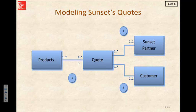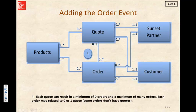We've got our multiplicities on here, linking our relationships along our associations. Now if we'd like to take it a step further we can add the order event to our diagram. So now we have not only just quote but we also have order. Each quote can result in a minimum of zero orders and a maximum of many orders, and each order may be related to zero or one quote.